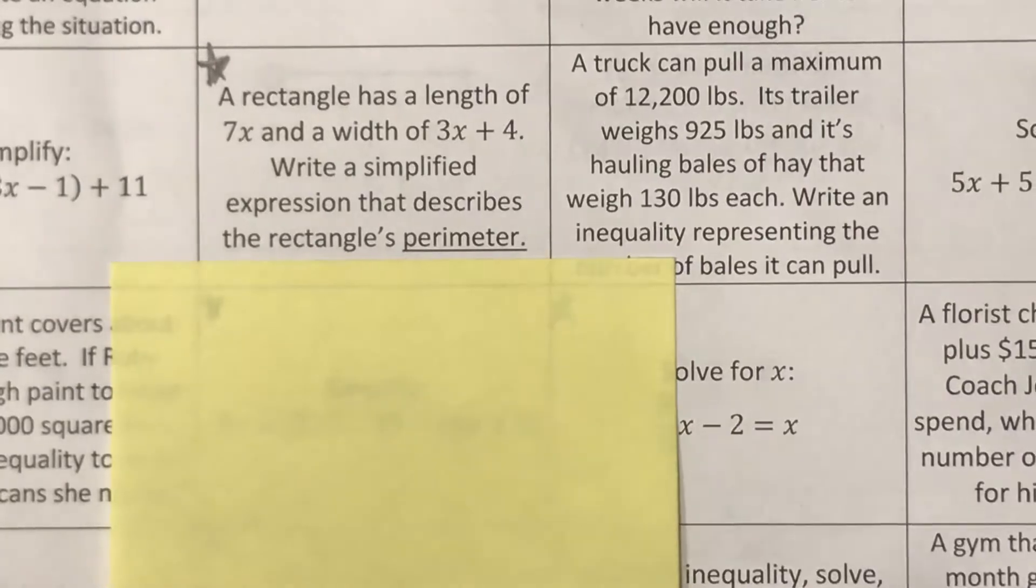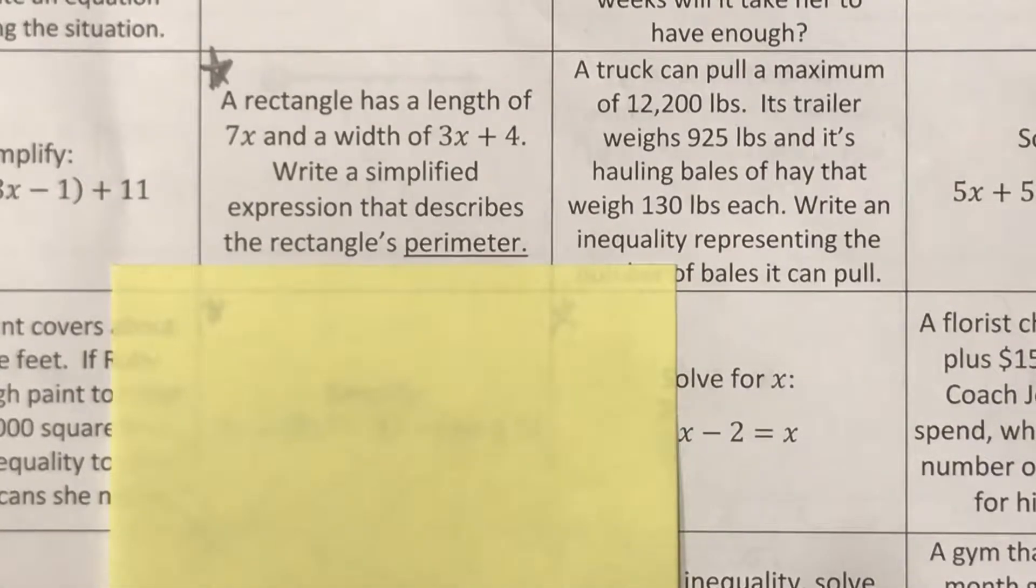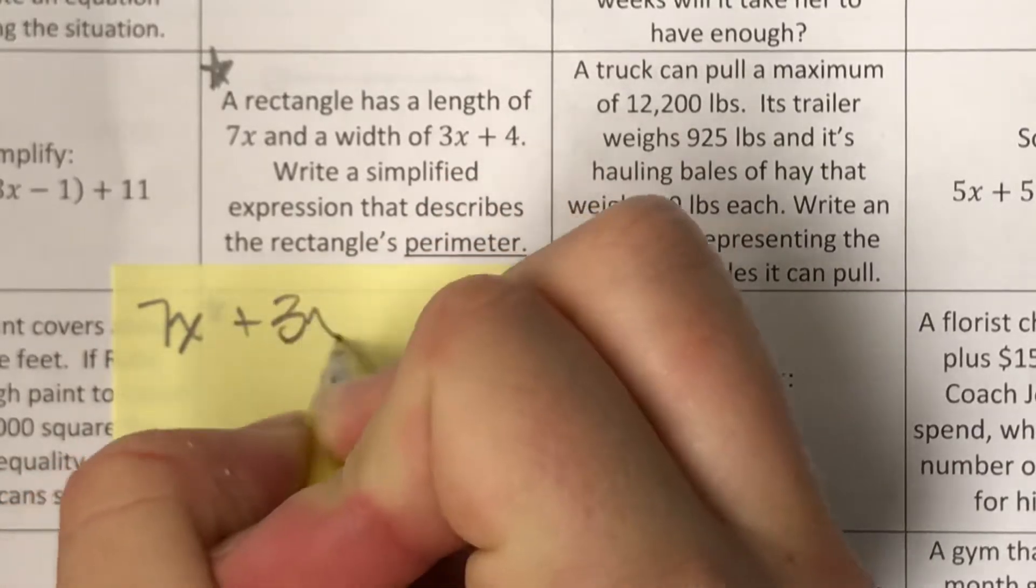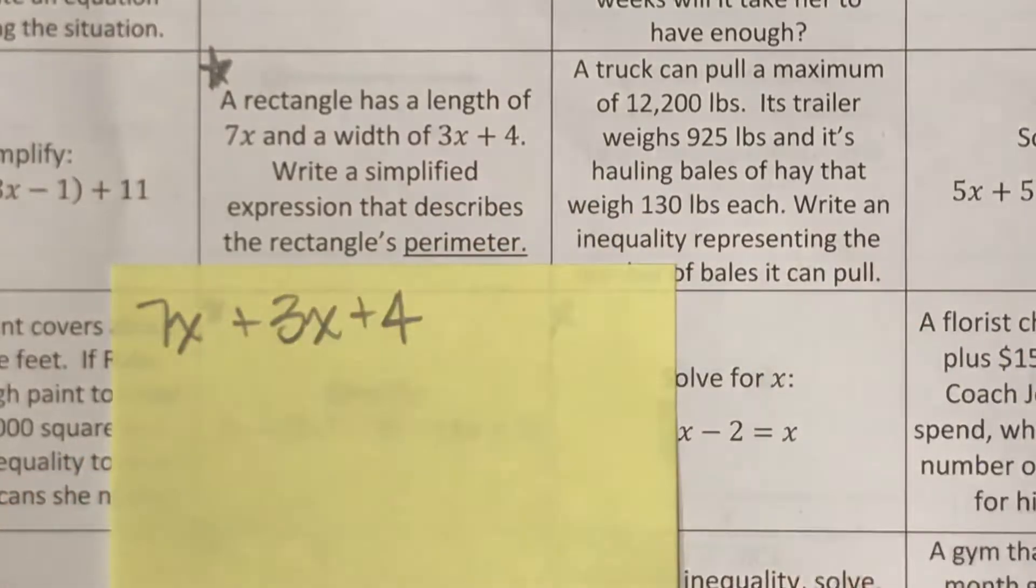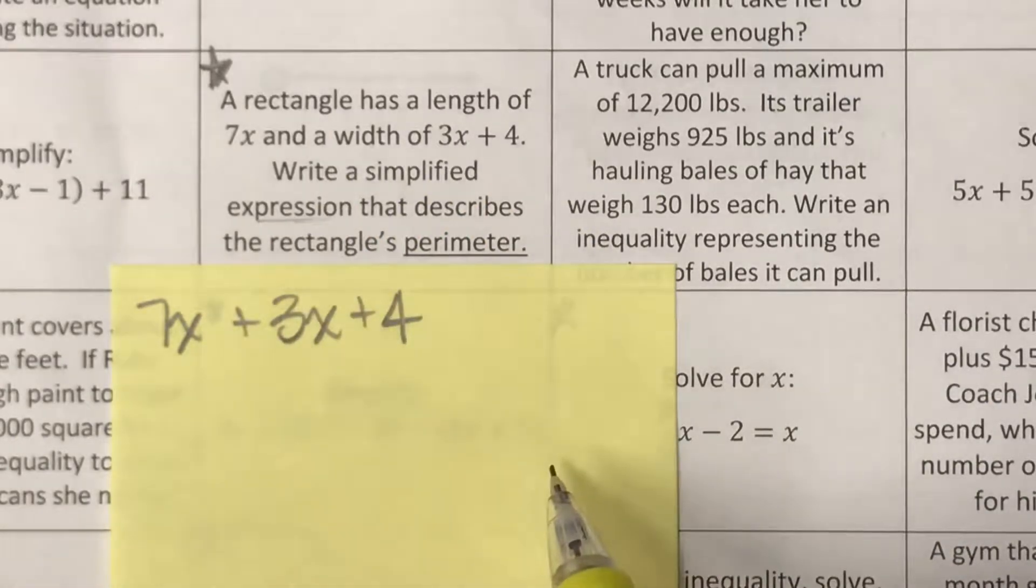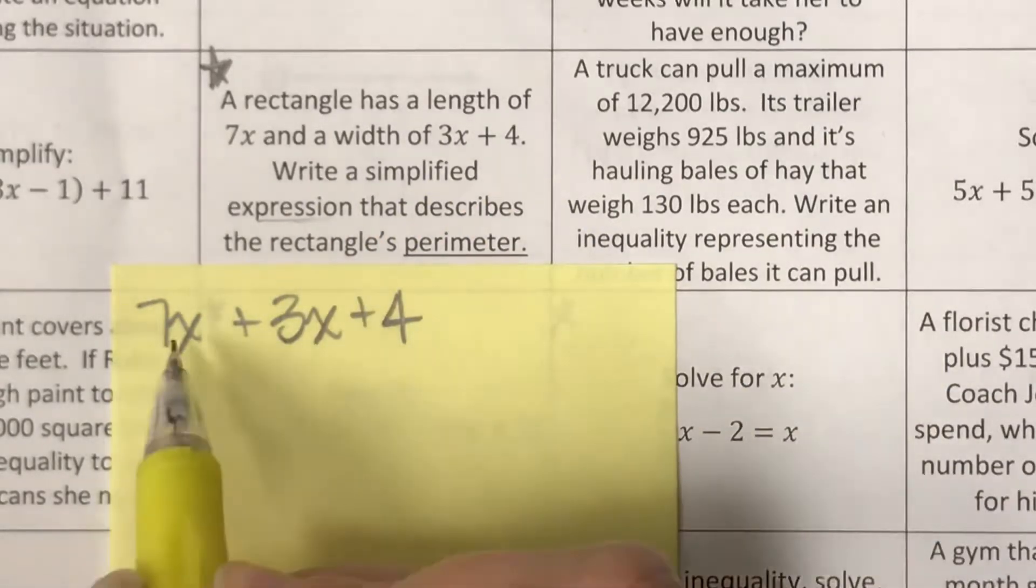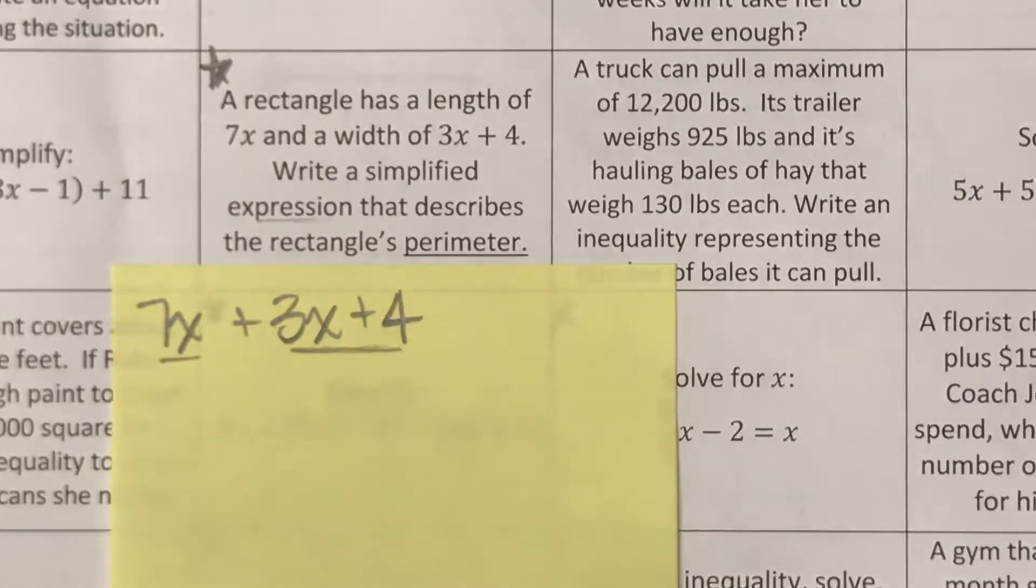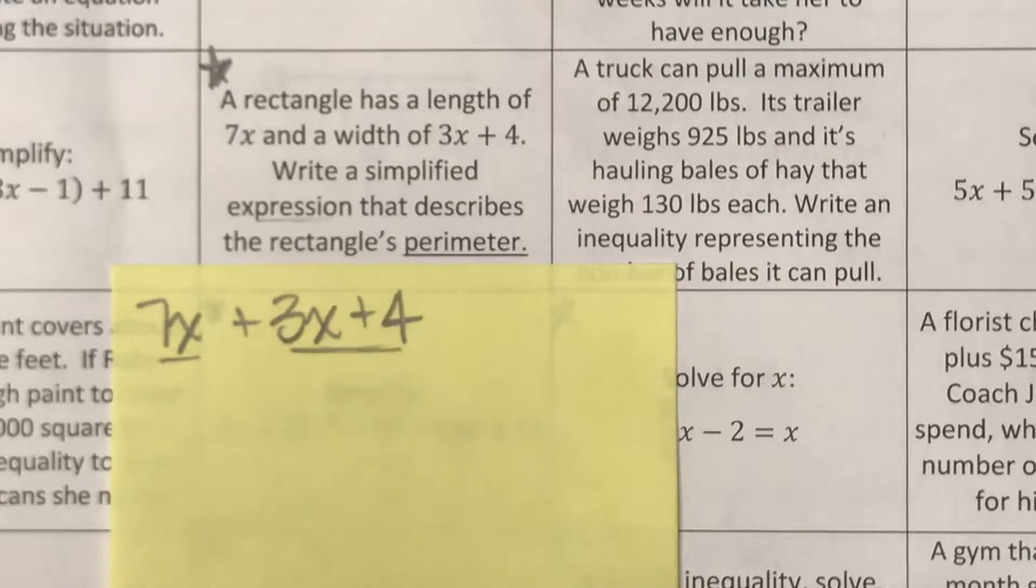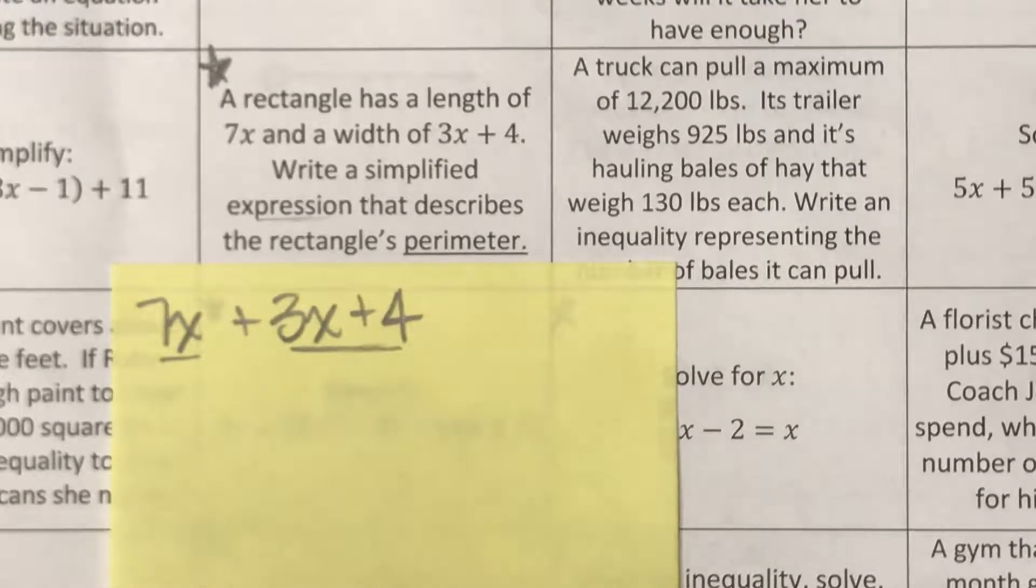So just a reminder, perimeter means you are adding up all the sides. So I'm going to add up these sides that I currently have, but you've got to remember, and all we're doing is an expression, we don't really have a full equation here. You've got to remember that this is only two sides of your rectangle. So I've got to do something to account for the other length and the other width.